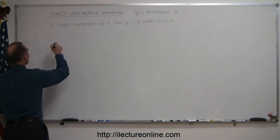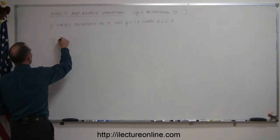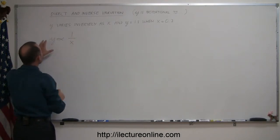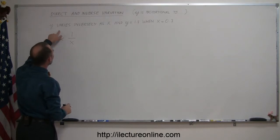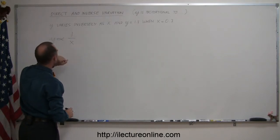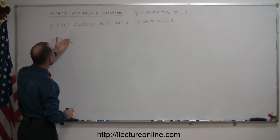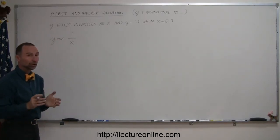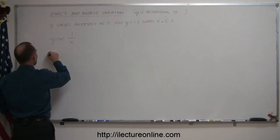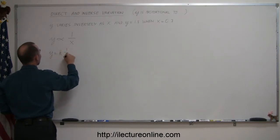So we can write that y is proportional to 1 over x. What this means is that y varies inversely as the variable x. To turn that into an equation we have to introduce a constant of proportionality, so y is equal to k times 1 over x.